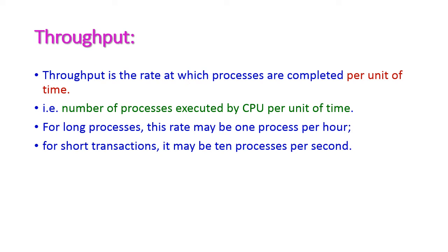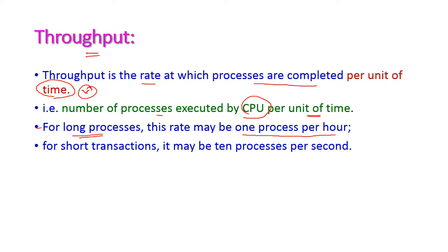The second criteria is throughput. Throughput is nothing but the rate at which processes are completed per unit time — that is, the number of processes executed by the CPU per unit time. For long processes, the rate may be 1 per hour, meaning the CPU can complete only one process per hour.